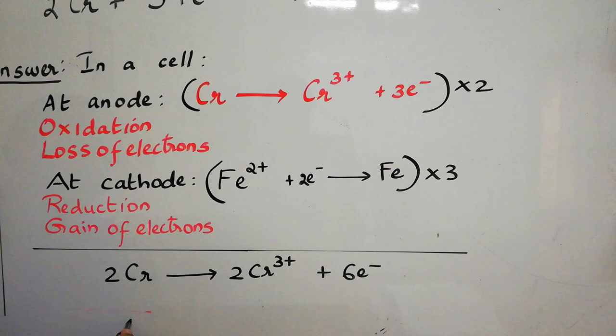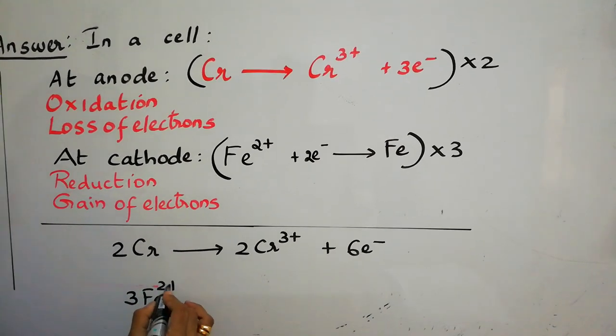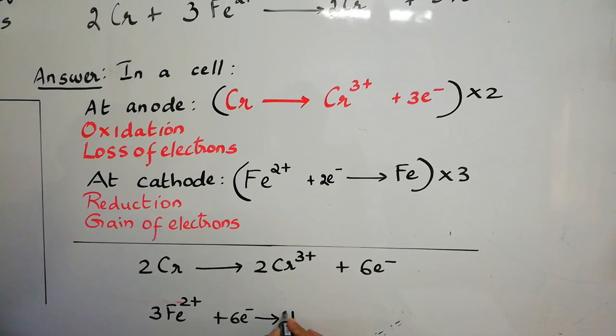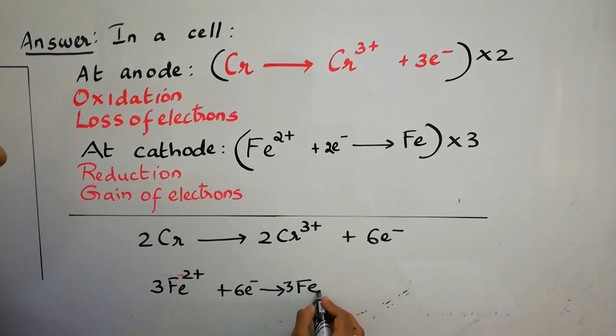Similarly, the cathodic reaction, 3 Fe 2 plus plus 6 electrons gives 3 Fe.